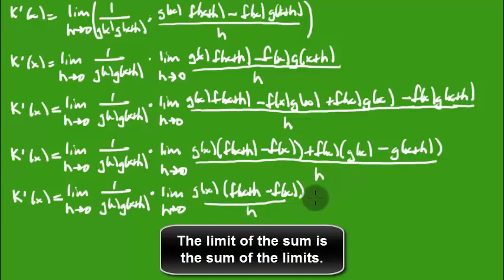And I've got the sum of the limit as h approaches zero. Okay, what do I got here? I've got f of x. I also have g of x minus g of x plus h, and this is all over h as well.